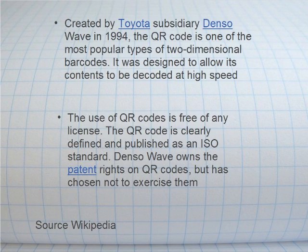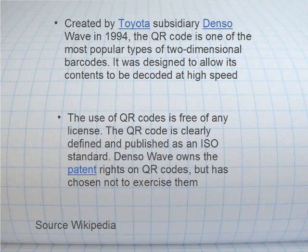QR — what is it? It's a two-dimensional code. It was developed by a car company, part of Toyota, called Denso Wave, back in '94. It's become very popular. They own a patent to it and the rights to it, but they don't enforce that. So in effect, it's sort of like an open source property that the world has embraced and is having a great time with.